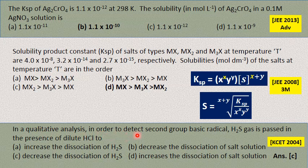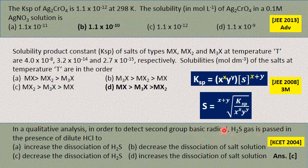In qualitative analysis, to detect second group basic radicals, H2S gas is passed in the presence of dilute HCl. H2S is a weak acid; HCl provides H⁺ ions common with those from H2S dissociation. The common ion effect decreases the dissociation of H2S, resulting in fewer sulfide ions in solution. This is option C — the correct answer. For fourth group analysis, H2S is passed in alkaline media, which increases H2S dissociation and provides more sulfide ions.